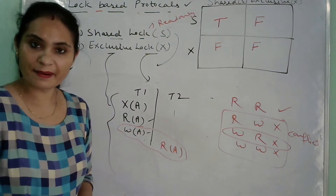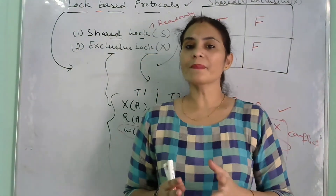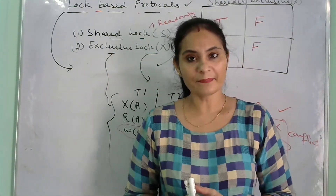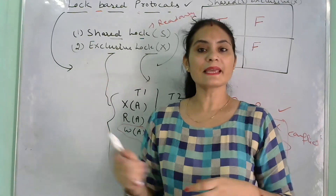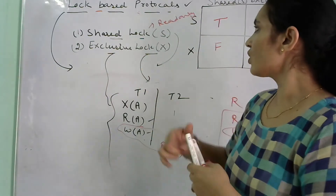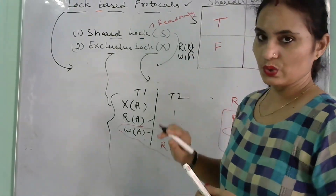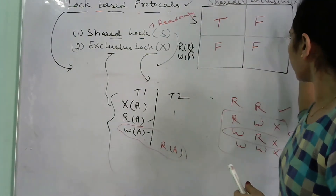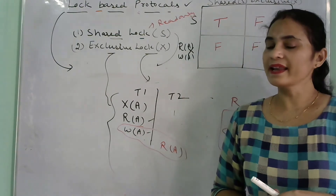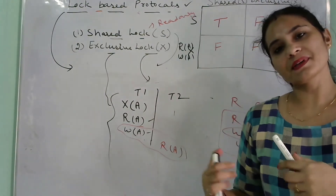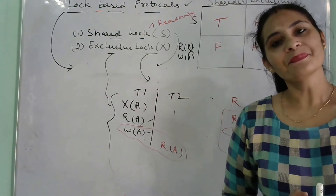So today's discussion in this video was about lock-based protocols. We have two types: shared lock and exclusive lock. In shared lock, only read operations occur; in exclusive lock, both read and write operations occur. We also covered the compatibility table, which you need to learn well. That's all for today — see you in the next video with the next topic. If any problem arises, don't forget to leave a comment in the comment box. Thank you very much.